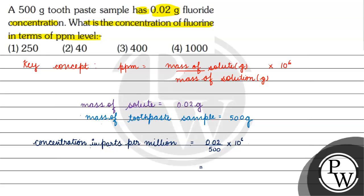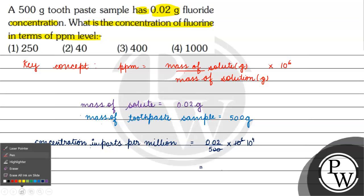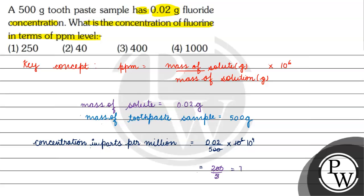When we solve this, the concentration becomes 0.02 times 10 to the power 4, which gives us 200. Divided by 5, this equals 40. The correct answer for this question would be option 2. I hope you understood it well. Thank you and all the best.